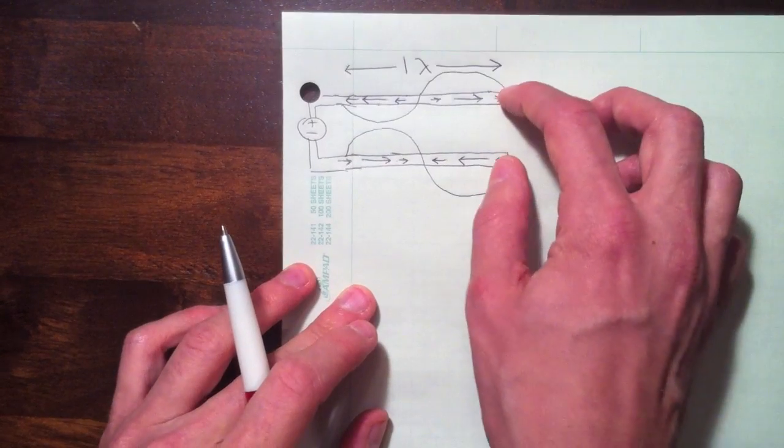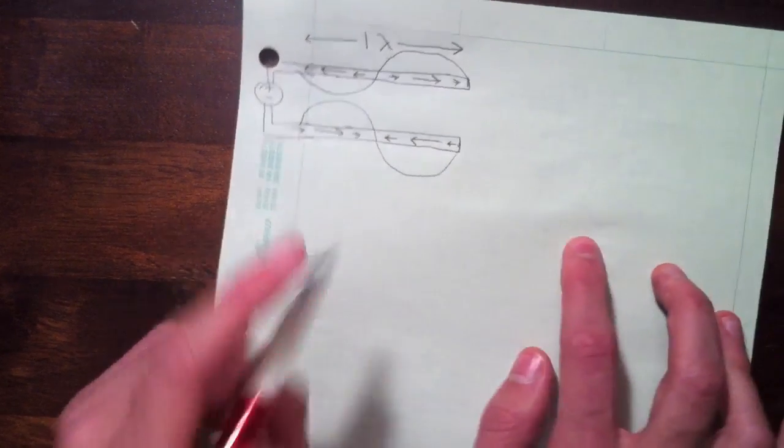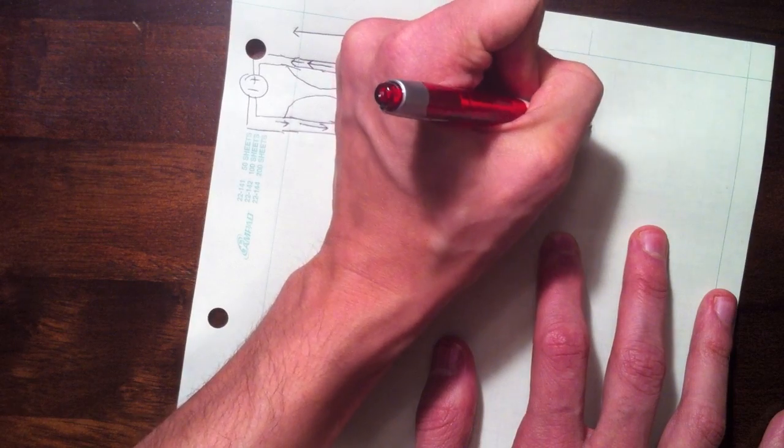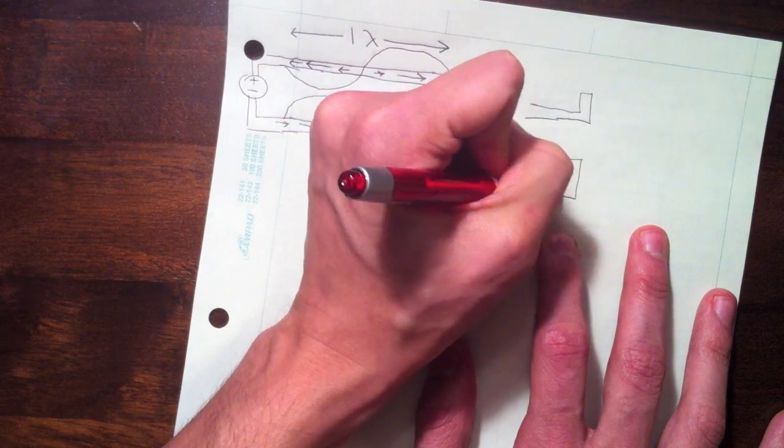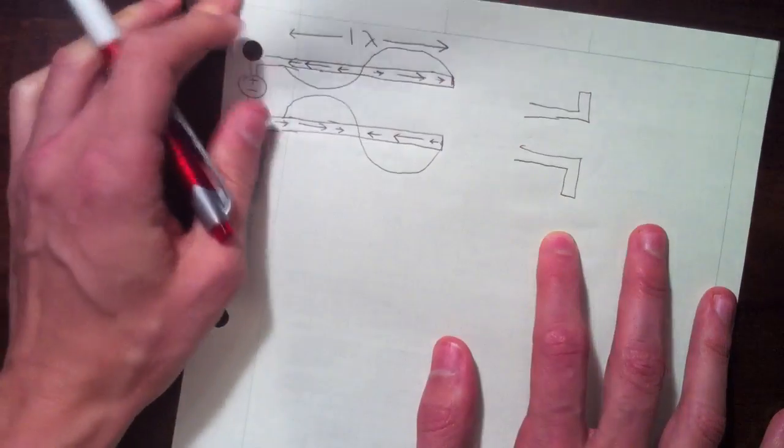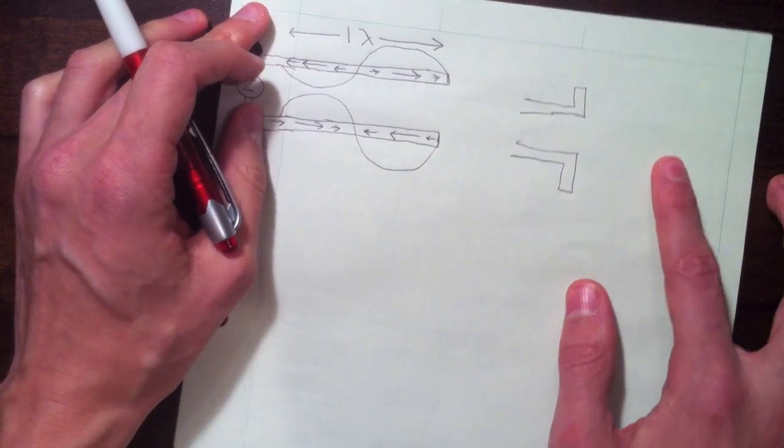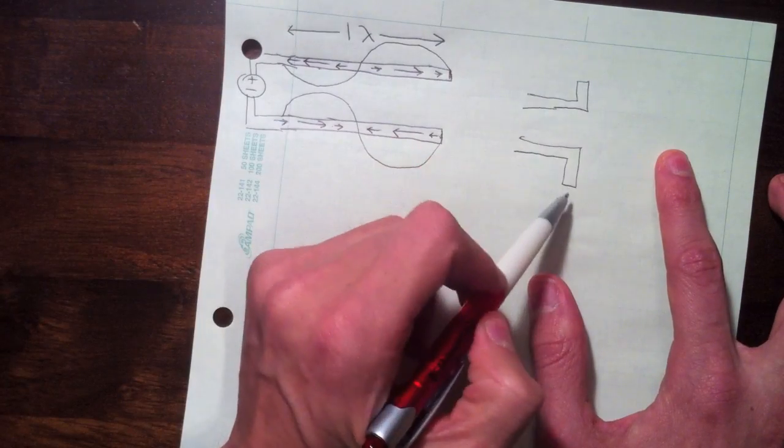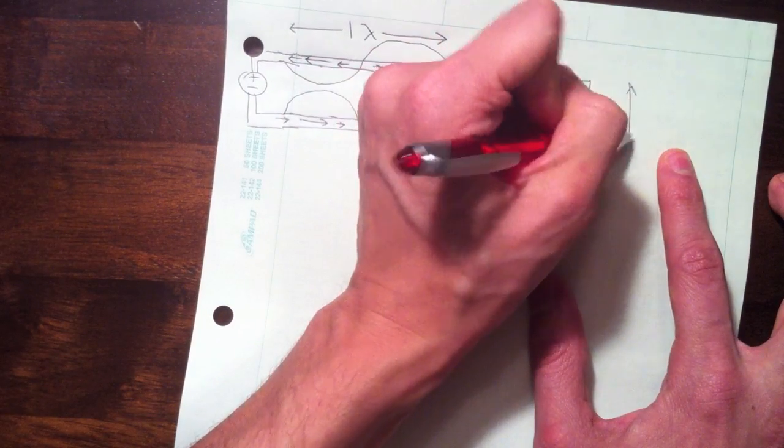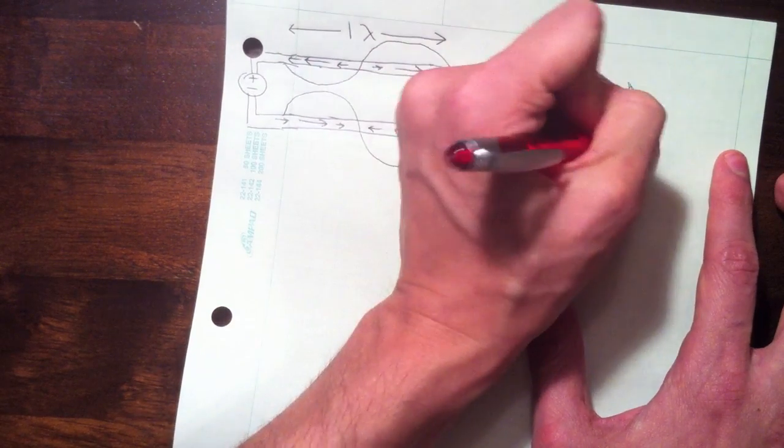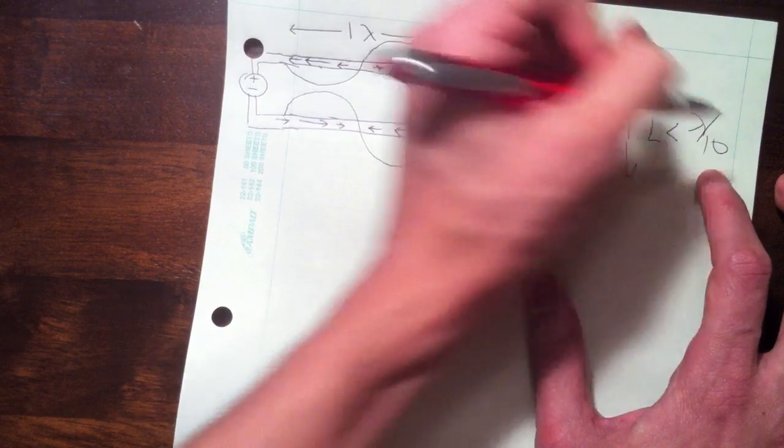So what happens if we start to bend this transmission line out? So for instance, we do something like this. So all we've done is take our transmission line and bend the ends up. And so again, it's still open-circuited, and this, we'll say, is a very small amount, so we're talking like the total length here is less than lambda over 10.